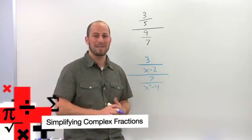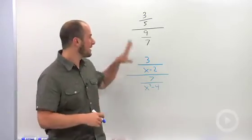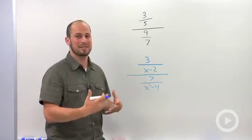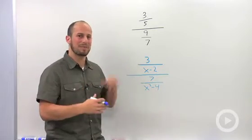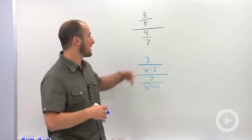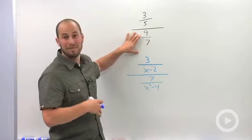Simplifying complex fractions. A complex fraction is a fraction where we have more than one fraction involved. We're used to just a simple 3 over 5, one thing in the top, one thing in the bottom. A complex fraction is throwing in an extra fraction. In this case, both the numerator and denominator are fractions.